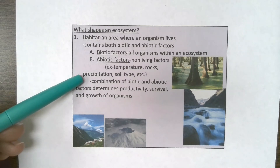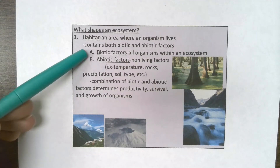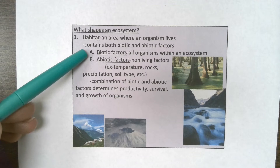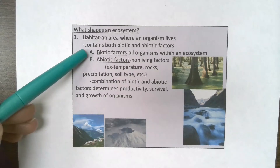You've got a couple of examples there. Anything that falls in any of the kingdoms — archaebacteria, eubacteria, protista, fungi, plantae, and animalia — is going to be a biotic factor. Notice I'm pulling back to the kingdom chart there. We're going to go back to Unit 1 with everything we do all year long.